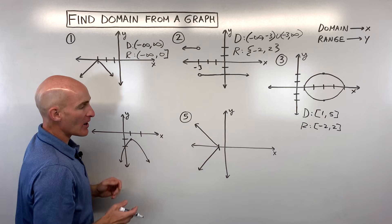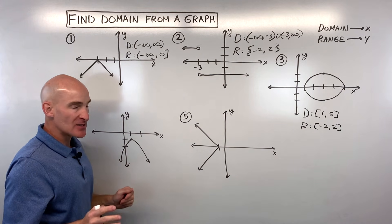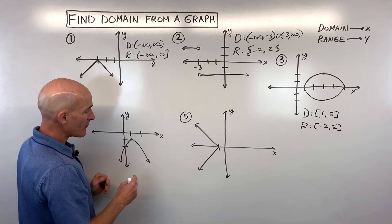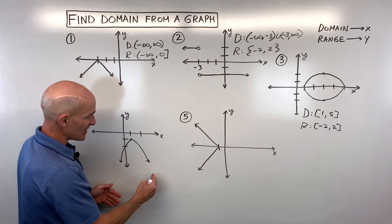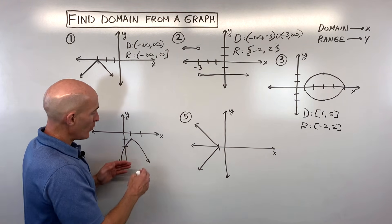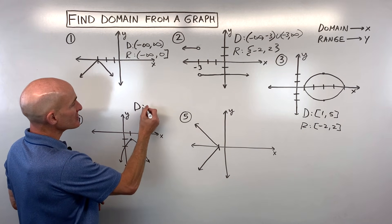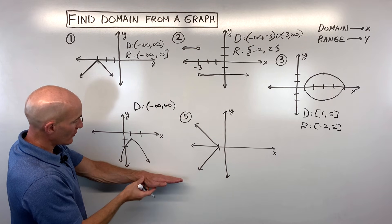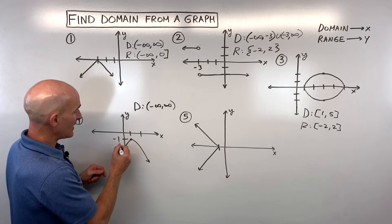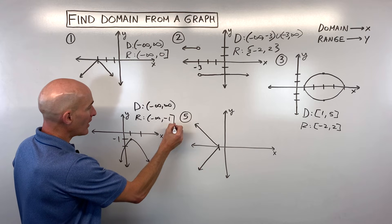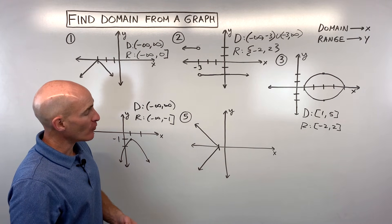For number four, what can the domain be? Sometimes people get confused because this is a parabola — a u-shaped graph. Students ask how do you know it doesn't eventually become a vertical line since it's curving steeper. With these parabolas it's going to gradually go to the left and right forever, so the domain is all real numbers, or negative infinity to positive infinity. For the range, going from low to high, this goes down to negative infinity and up to negative one, so the range is (-∞, -1] — square bracket on negative one because it includes it, and infinity is always open.